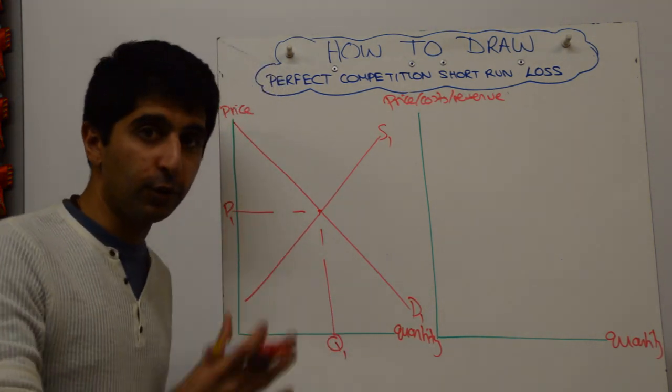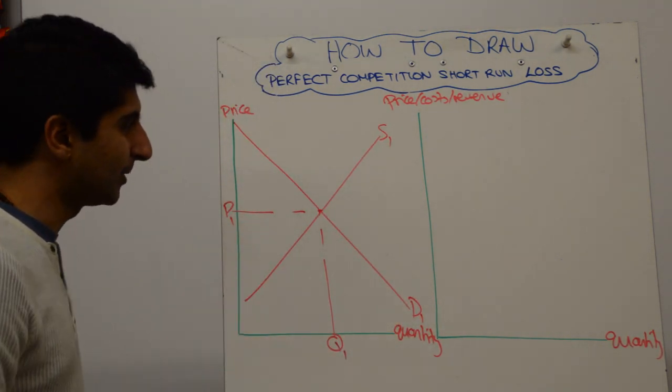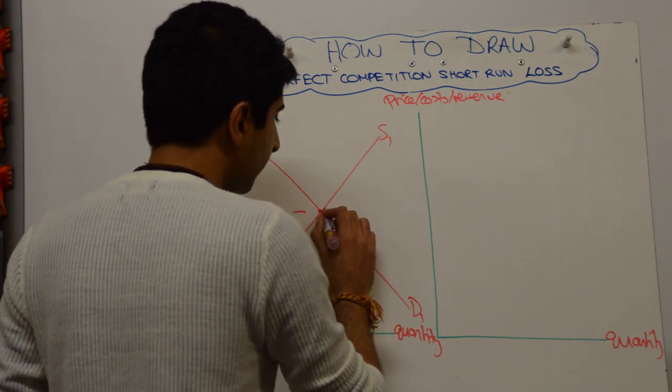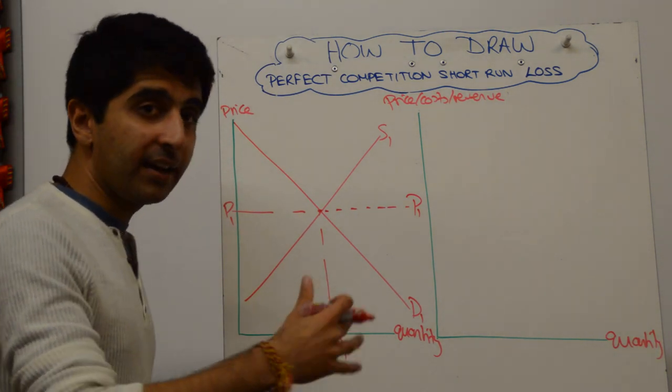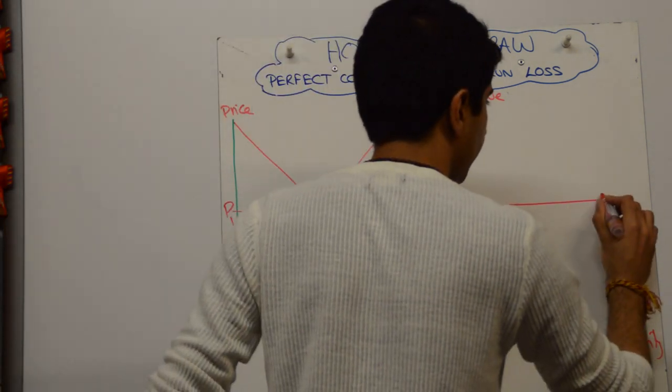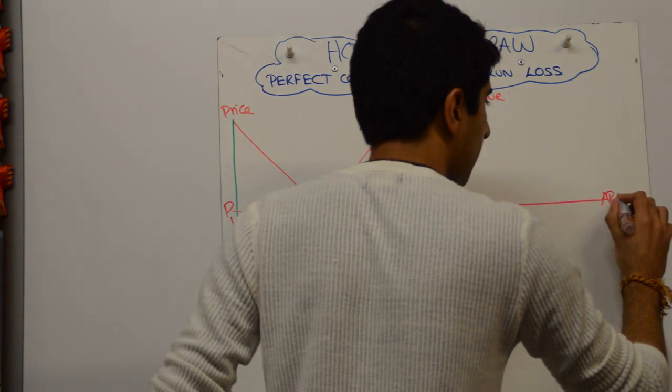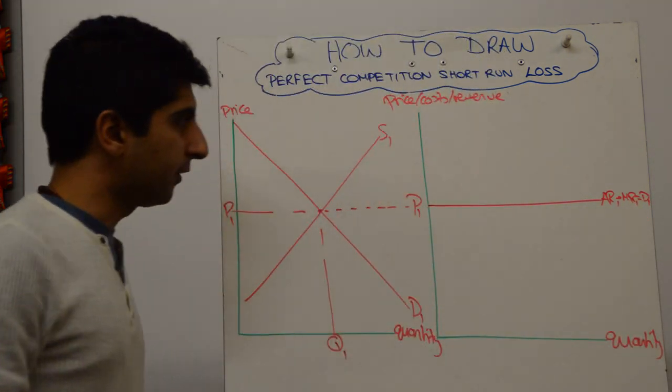Always guys, label as you go through. Don't leave anything to the end. You'll forget something, I'm sure. Firms are price takers, so take this price across, call that P1. That is the average revenue, marginal revenue, demand curve for this firm. Take that across there and label it AR1 equals MR1 equals D1. That's good.